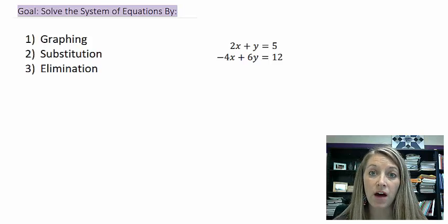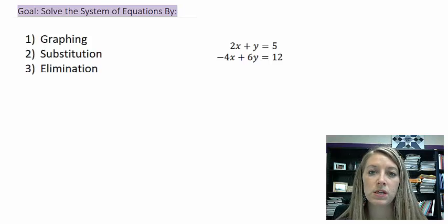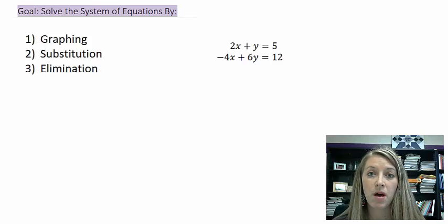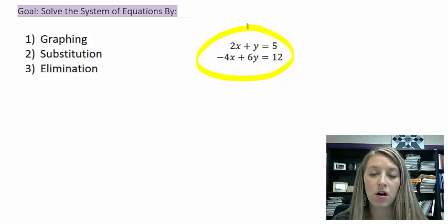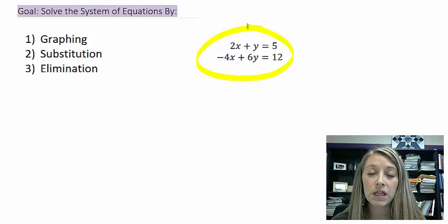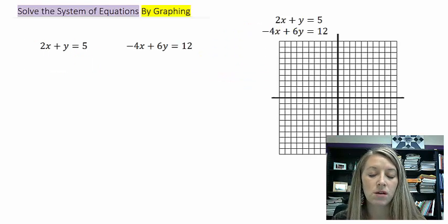We can solve it by graphing, we can solve it by substitution, and we can solve it by using the elimination method. And what a system of equations is, it's like this over here. We have two different linear equations, and we want to figure out where did those linear equations match up. And what do I mean by that, by matching up? Let me go ahead and show you that when we work through the first method.